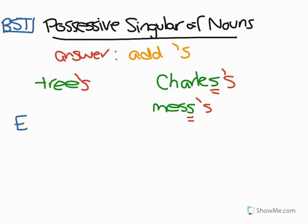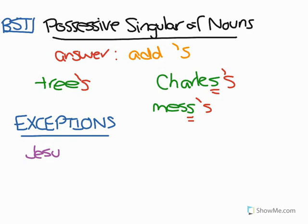Now there are some exceptions to this rule, but they are very seldom used. First, the possessive singular of Jesus is just an apostrophe — there's no apostrophe-s. Also, the possessive singular of ancient names ending in -es or -is is just an apostrophe. An example of this is Moses — the possessive singular of Moses is just with an apostrophe, not apostrophe-s. Another example is Isis — it's just an apostrophe.